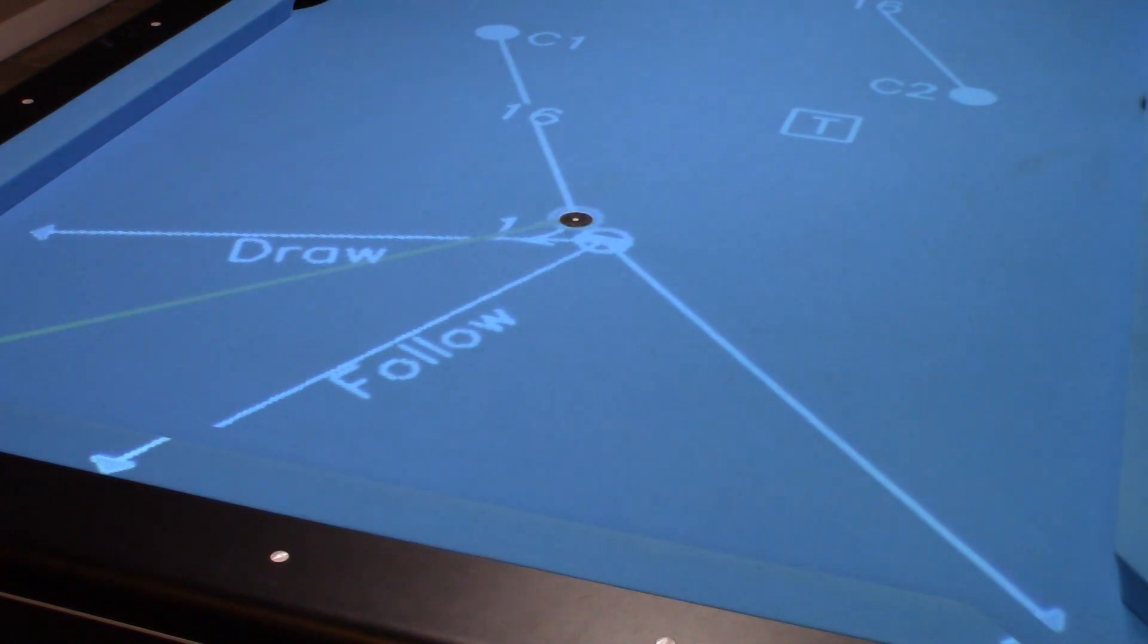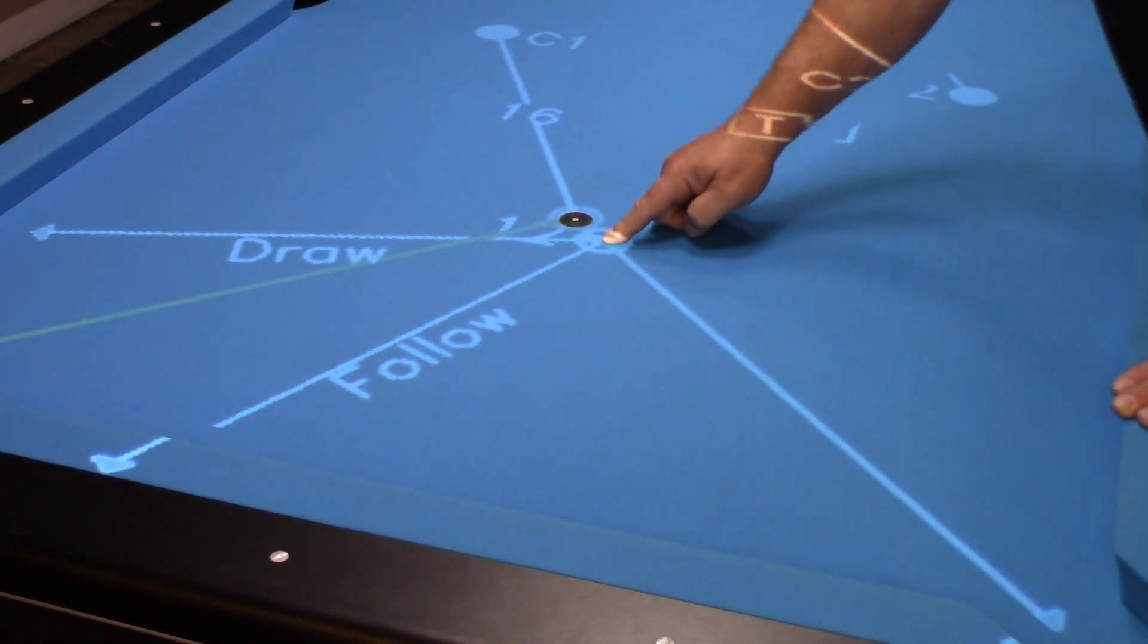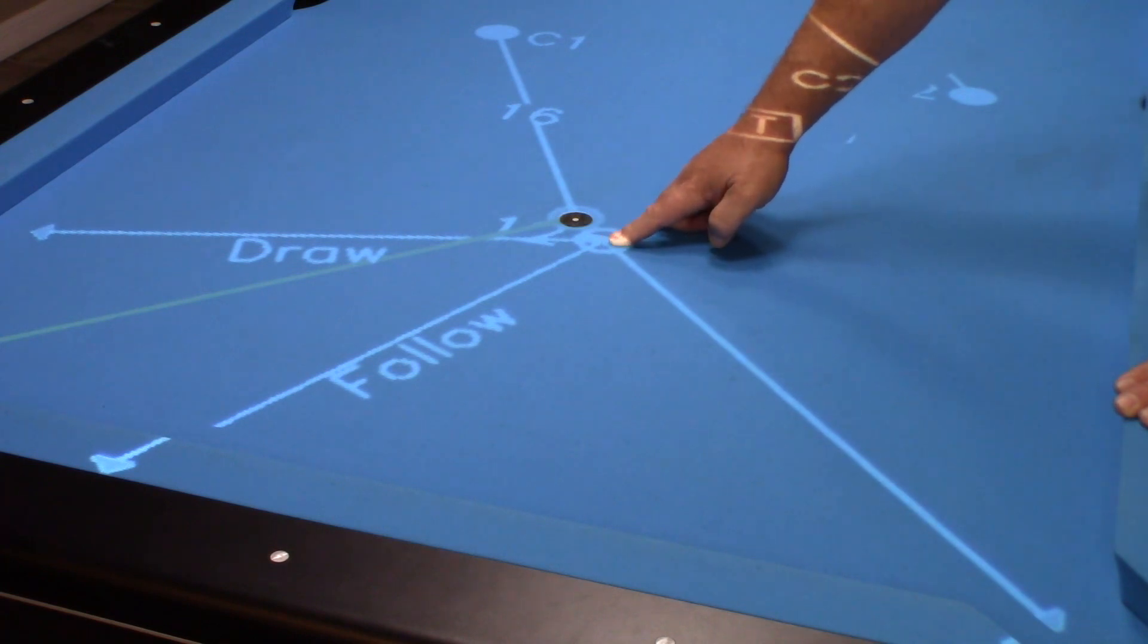For this one, like the way I have it set up, my cue ball is over here, object ball here. If I hit a center shot, like a stun shot...